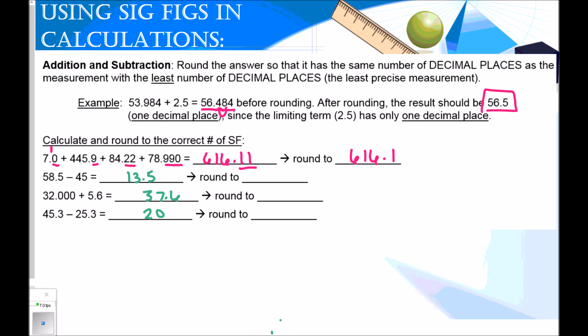Welcome back. I've written in the exact numbers, but I want to walk you through how we round these. In our next example, I've got 58.5 and 45. 58.5 has one decimal place, 45 has zero decimal places. So my answer needs to have zero decimal places. The 5 is going to round our 13 up to a 14, and that is the final and correct answer.